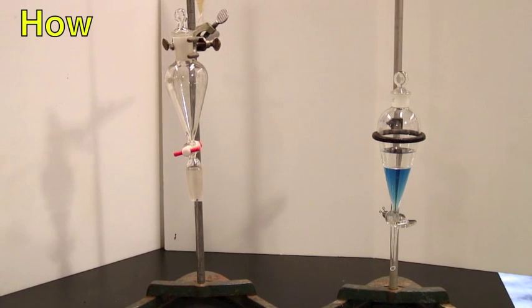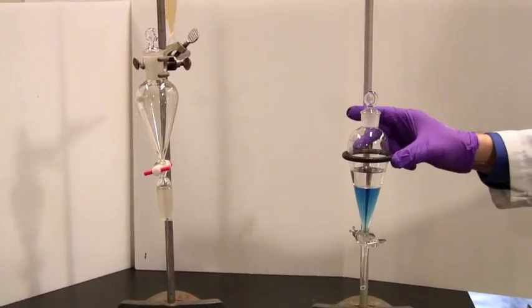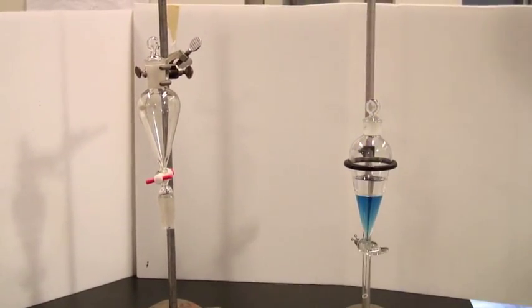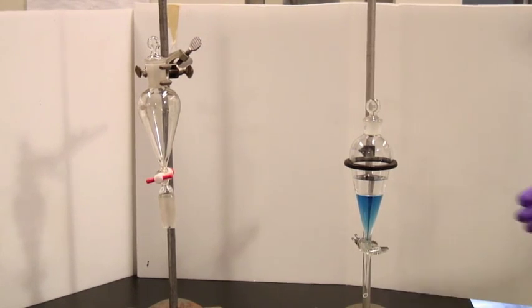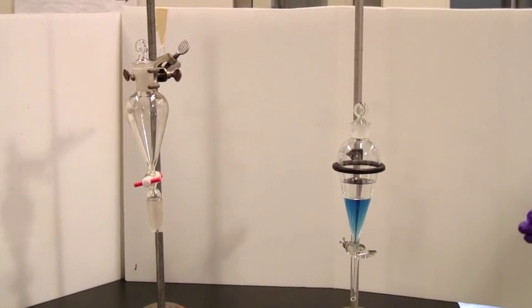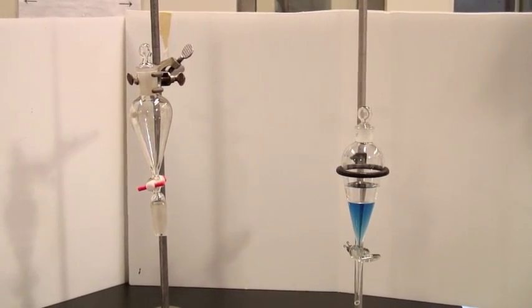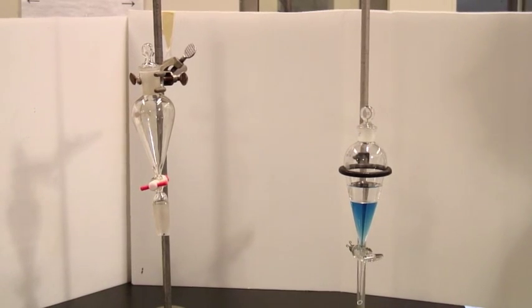Separation of two phases using a separatory funnel is more simple than microscale because you don't need droppers. All you need is a separatory funnel with its lid and either a clamp, a three-finger clamp, or a ring stand, as you see here. Clamp the funnel upright and let the two phases settle and separate out. You'll then need a container so that you can catch whatever drains out.